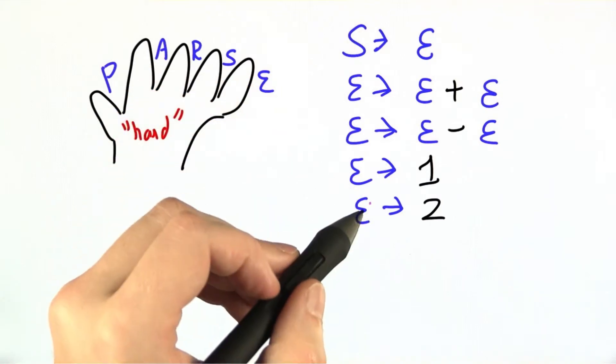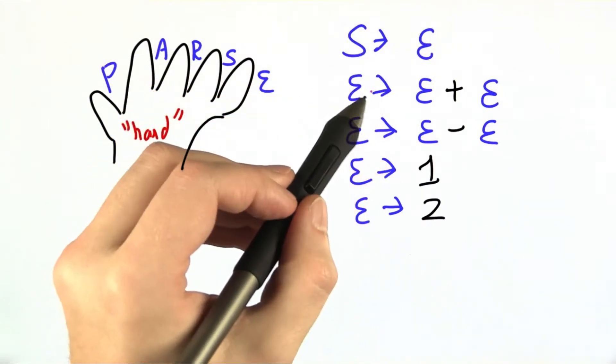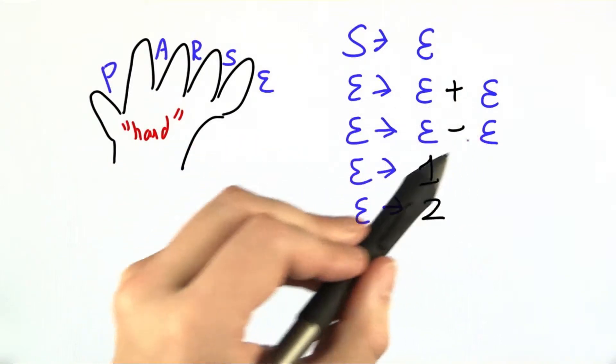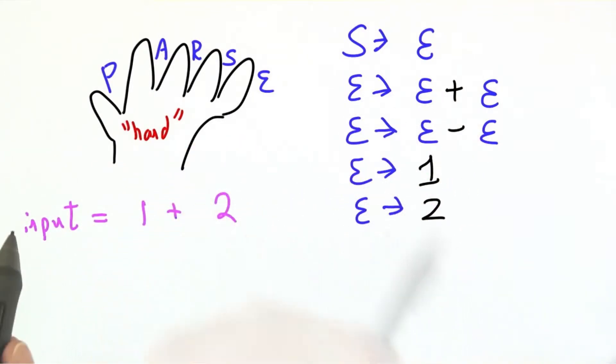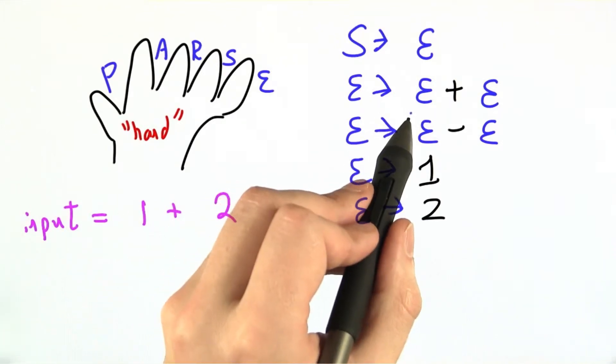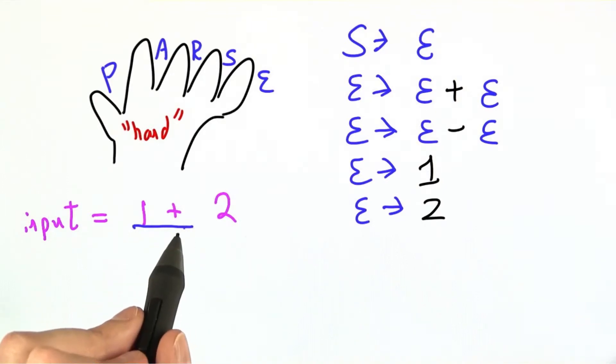Consider this simple arithmetic expression grammar. It has a starting non-terminal but then quickly goes to e, e plus e, e minus e, and one and two instead of number. Let's just make it finite. Suppose the entire input is one plus two, which is in the language of the grammar. And currently, we've only seen the one and the plus.